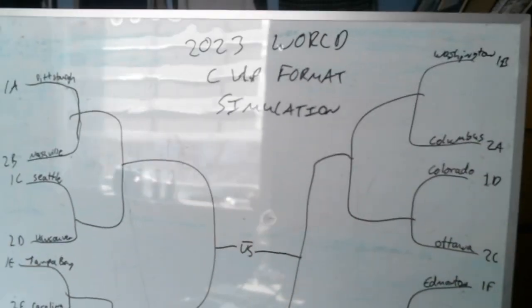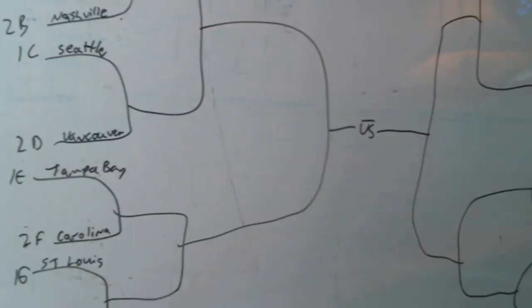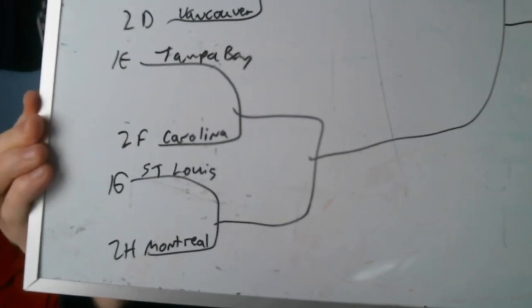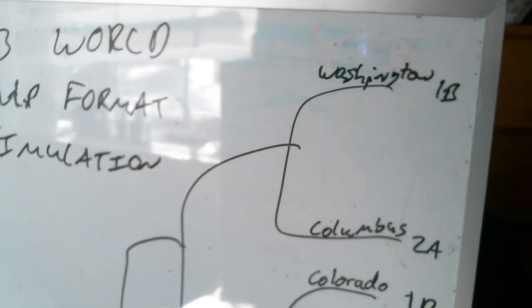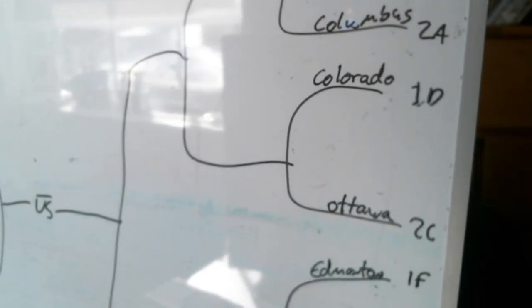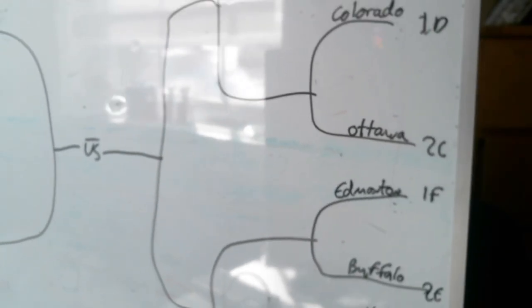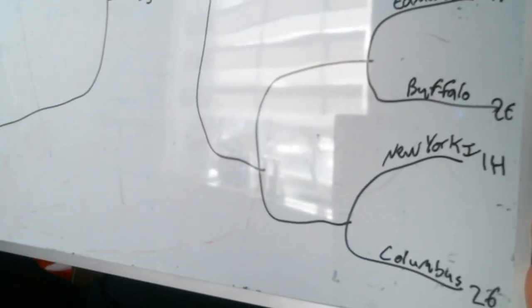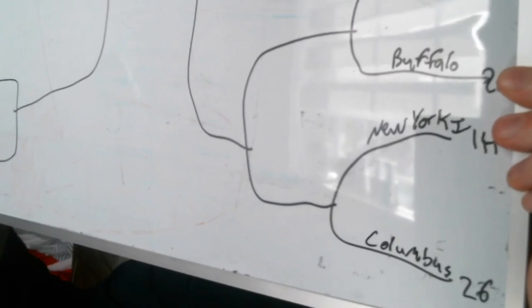Looking at the playoff matchups for the round of 16: Pittsburgh vs. Nashville, Seattle vs. Vancouver, Tampa Bay vs. Carolina, St. Louis vs. Montreal, Washington vs. Columbus, Colorado vs. Ottawa, Edmonton vs. Buffalo, and New York Islanders vs. Columbus.